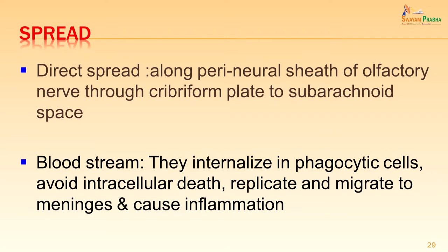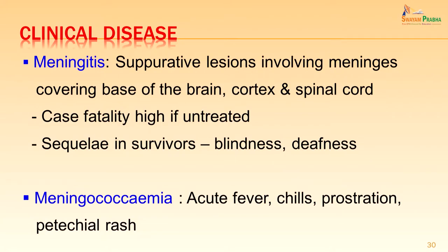The other mode of transmission could be via the bloodstream, where they are internalized into phagocytic cells, avoid intracellular death, replicate and migrate to the meninges causing inflammation. The clinical disease involves suppurative lesions of the meninges covering the base of the brain, cortex and spinal cord. Case fatality with meningitis is high if left untreated. Sequelae in survivors could be blindness or deafness, so it is important to recognize and treat it promptly with antibiotics to prevent sequelae.